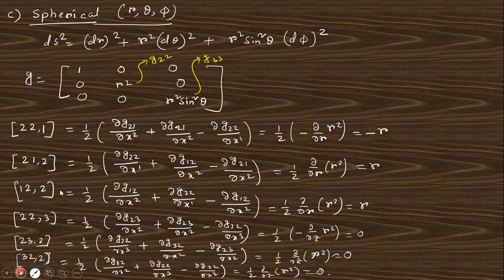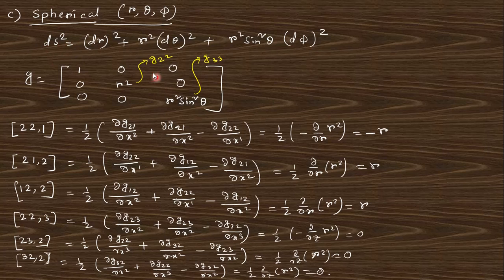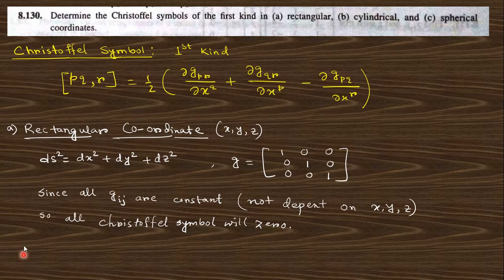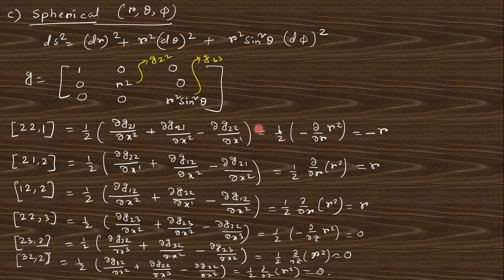In the next case that is the spherical polar coordinate system, in that case the arc length square will be like that. So here you can represent the matrix tensor in this form. Here you can see G22 is a function of r square and G33 will be function of r square sine square theta. Now we can find out the term which consists 22 or 33. So if you put 22 you will get this formula, just put this equation in this formula you can find out this value minus 1 minus 1 and so on. Take this screenshot, do yourself and match with this answer. I think clear about the process.